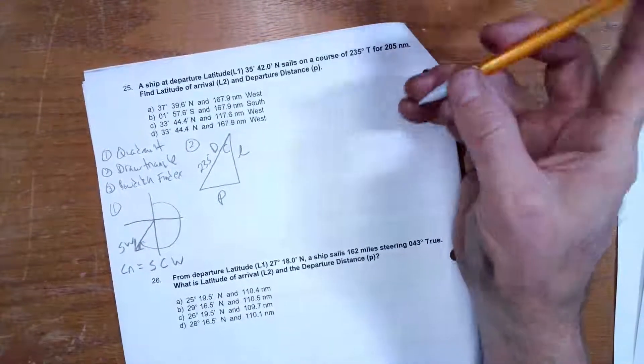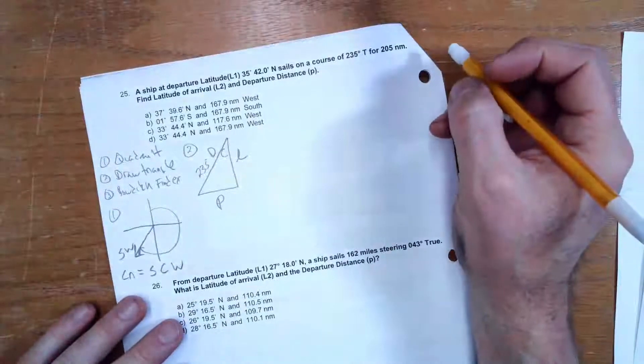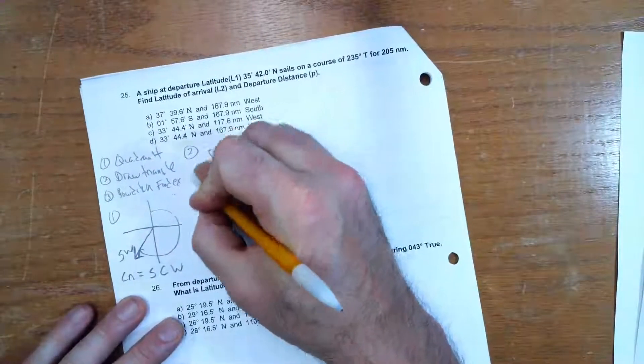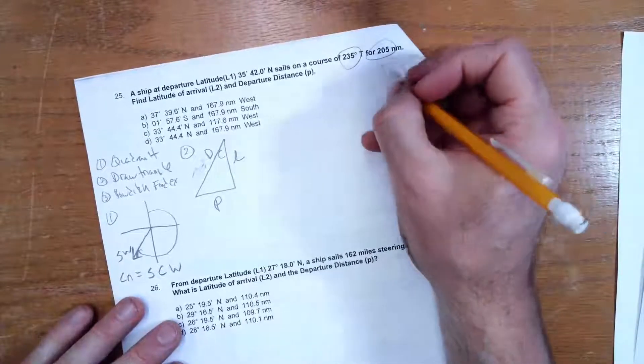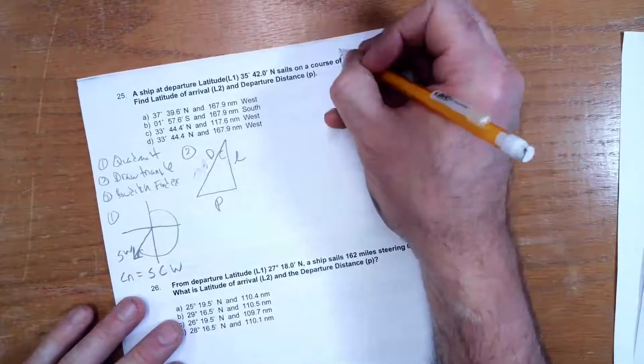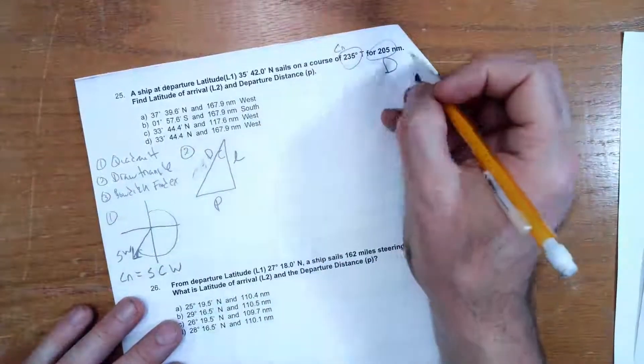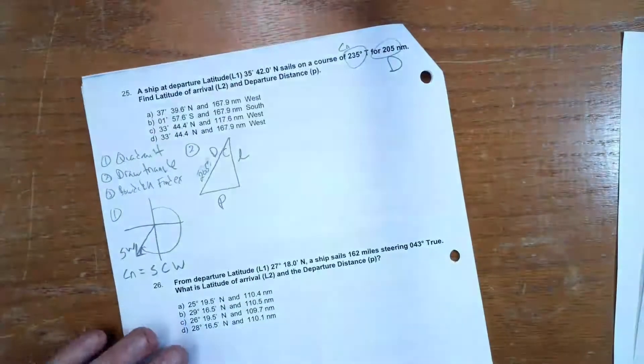By the way, that's not 235°. The distance, these two are very similar. It's easy to get these confused. This is D. This is Cn. So my distance is actually 205 miles.